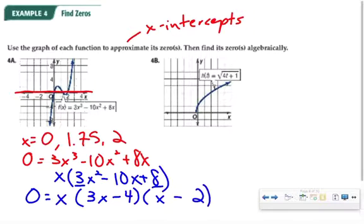And when I set each of these factors equal to 0, I can figure out my values for x. So x equals 0, or 4 thirds, or 2. So 4 thirds is equivalent to 1.3 repeating, so this one I was a little bit off, but 0 and 2 were accurate. But at least the 1.75 approximation is between 1 and 2, and that 4 thirds that I found algebraically is also between 1 and 2. So my approximation is somewhat supported by my algebra.